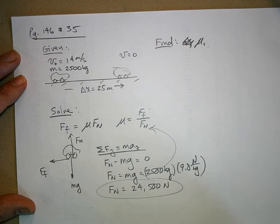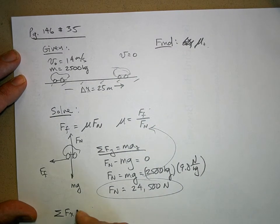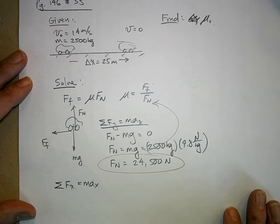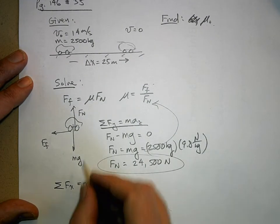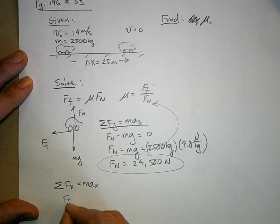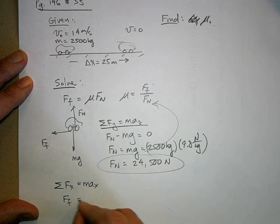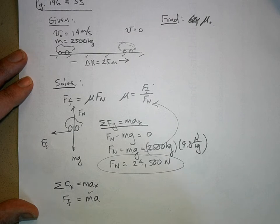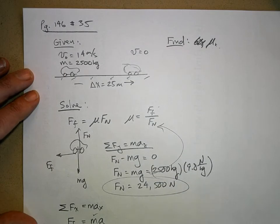Now, I still need the force of friction, so I'm going to now go in the x direction. Sum of the forces in the x direction equals ma in the x direction. What are the forces? There's only one of them. So the force of friction is the net force is equal to ma. Now, I know what the mass is, but I don't know what the acceleration is. But this tells me what to do. Figure out what the acceleration is.